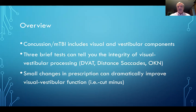Three brief tests: dynamic visual acuity test, distance saccades, and OKN — three tests that take about two to three minutes to run. Remember, small changes in prescription may not change visual acuity much; however, magnification is really the key in improving the VOR gain and reducing visual motion sensitivity. Thank you for your time and attention to this critical program on how optometrists and vision care providers can help patients with concussions and minimal traumatic brain injuries.